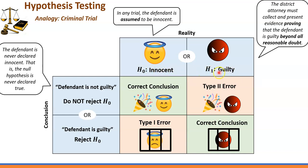which means that H1 is true. H0 is not true, but we state at the end that we do not reject H0. That is a Type 2 error.